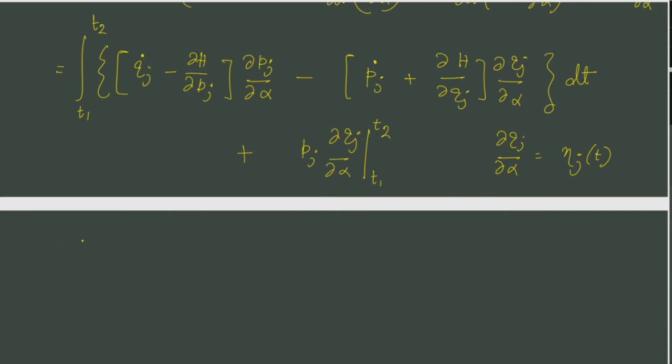And what about what we have inside? Now, if you look at the second term, the del Qj del alpha that is eta j for each generalized coordinate, it is independent. And what about del Pj del alpha? Well, we have not defined any variation of the Pj, but we can do that just like we did it for Qj. We can similarly do it.